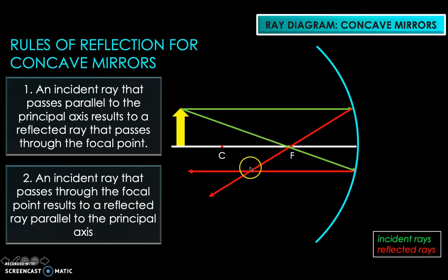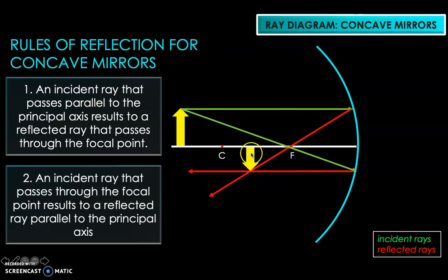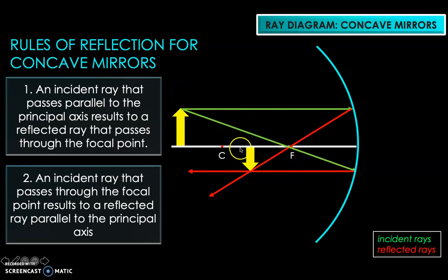The intersection of those two reflected rays traced from the same point on the object gives the location of the image. Since we traced them from the tip of the arrow, their intersection is the tip of the image. As a shortcut: if the bottom of the object lies on the principal axis, the bottom of the image also lies on the principal axis. A separate material explains why this shortcut works, but it won't be covered in full detail here.